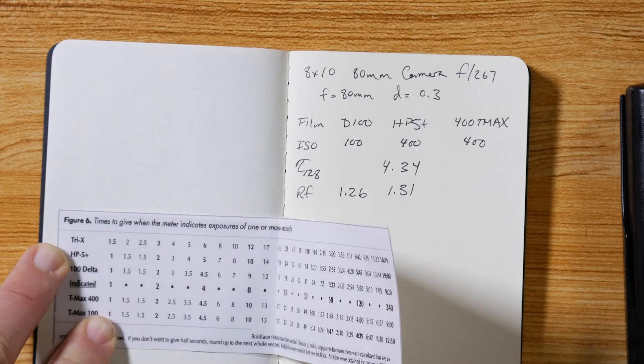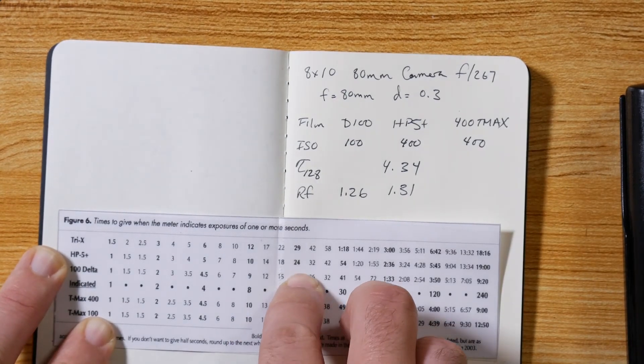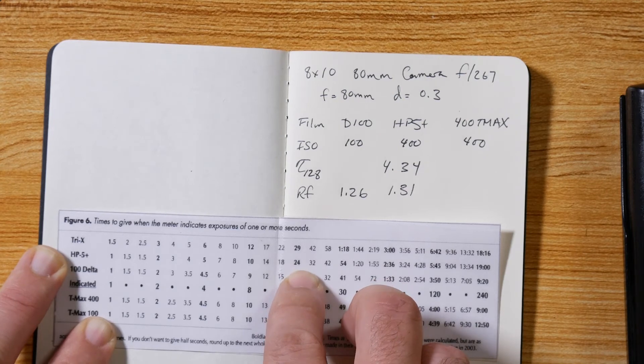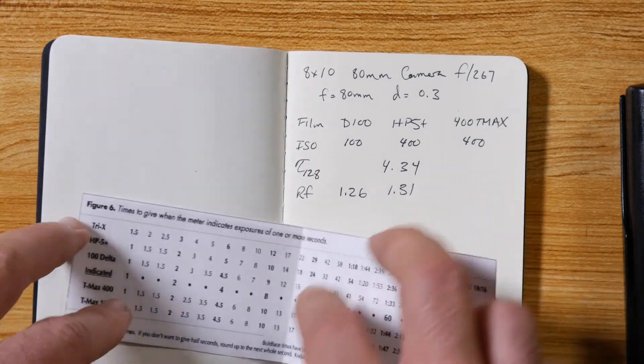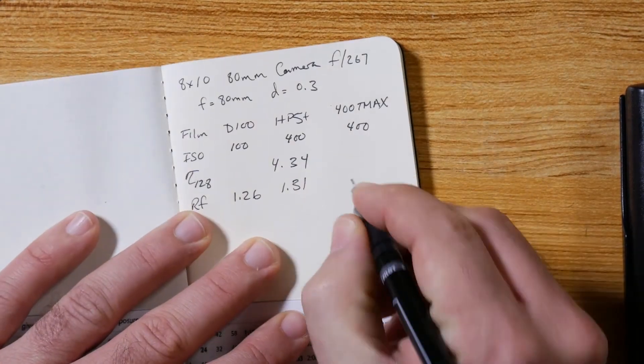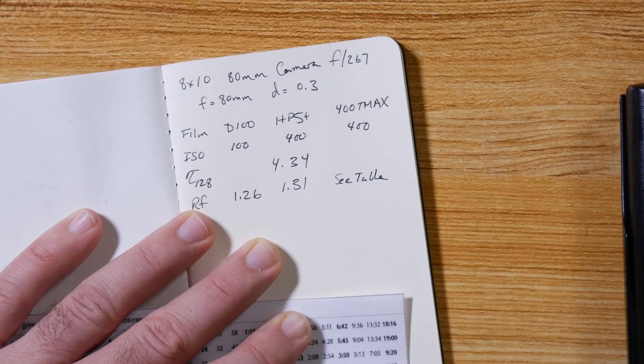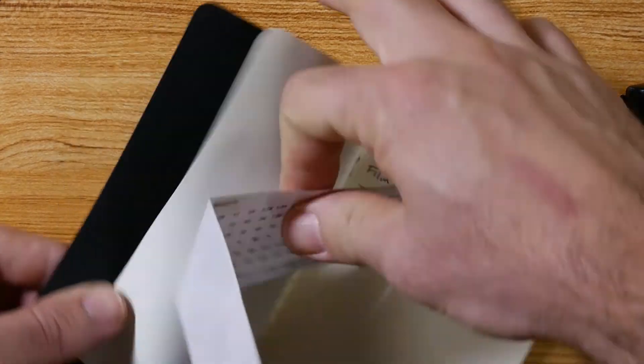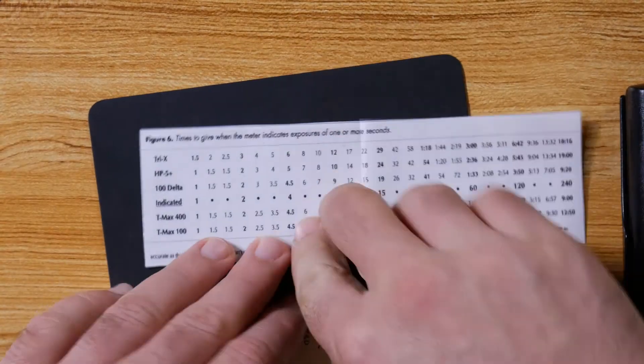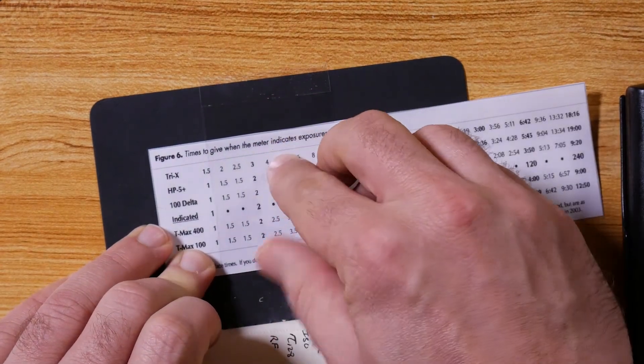If they don't agree, I'll probably make a judgment call, probably take the longer time just to be sure that I have enough exposure. Because remember, it's always better to overexpose than underexpose. So what I'm gonna do with this for T-max, I will say 'see table' and I'll probably just put this right inside the cover of the book like that.